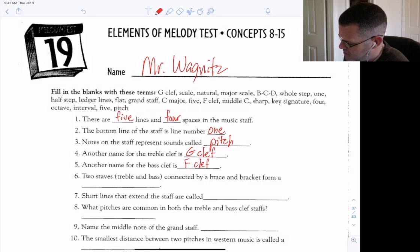Two staves, treble and bass, connected by a brace and bracket form a grand staff. Short lines that extend the staff are called ledger lines.